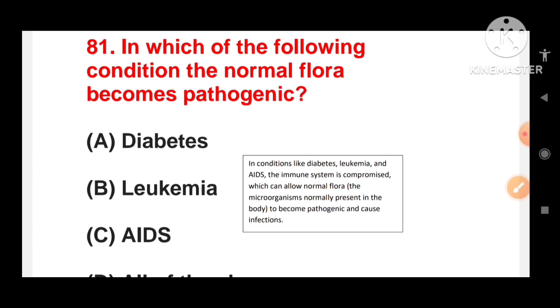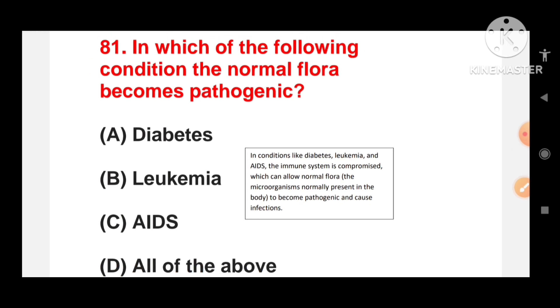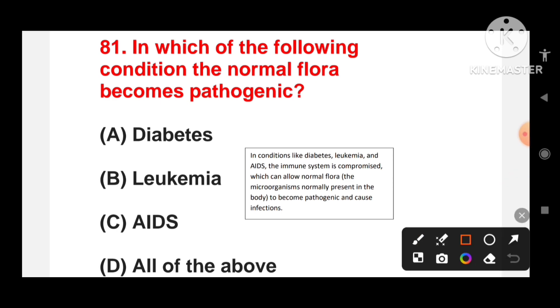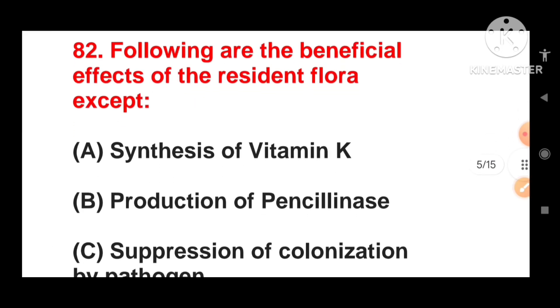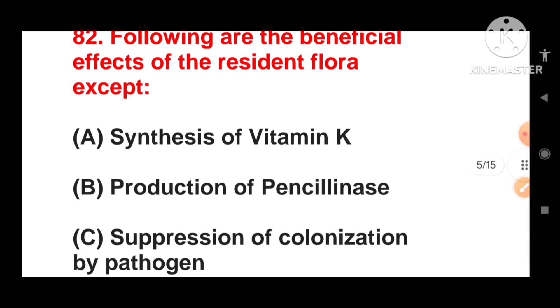In which of the following condition does the normal flora become pathogenic? Diabetes, leukemia, AIDS or all of the above? In conditions like diabetes, leukemia and AIDS, the immune system is compromised which can allow normal flora or microorganisms normally present in the body to become pathogenic and cause infections.